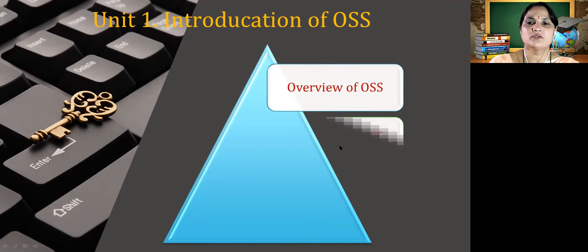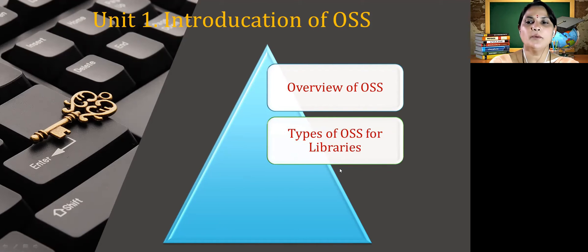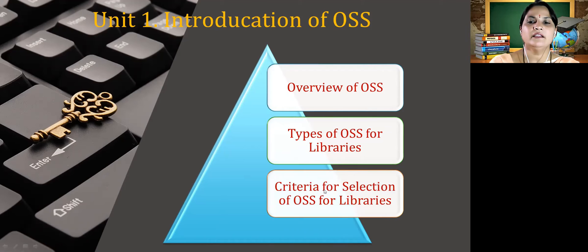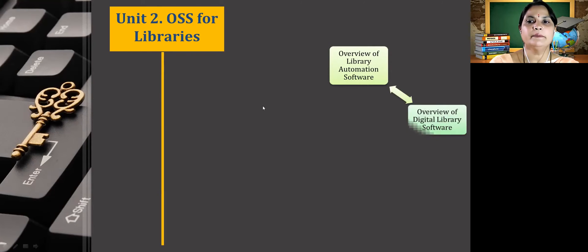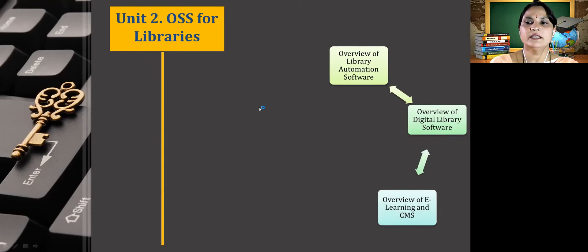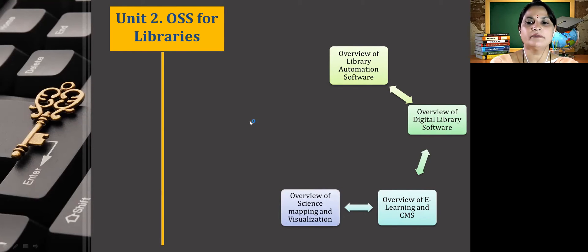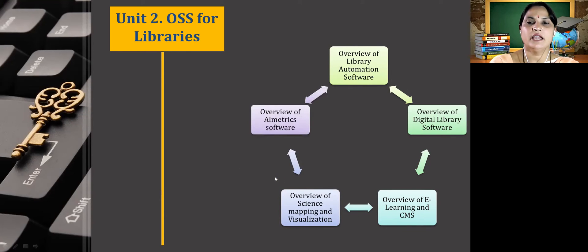Unit 1 on introduction to open source software includes an overview of open source software, types of open source software for libraries, and criteria for selection of open source software for libraries. Unit 2 on open source software for libraries consists of an overview of library automation software, digital library software, e-learning and content management software, science mapping and visualization tools, and all metric software.